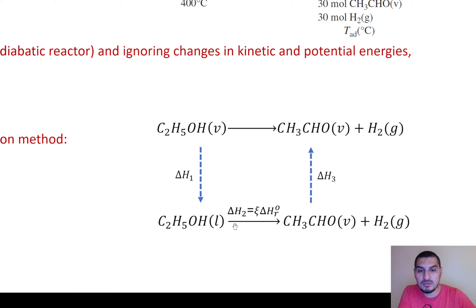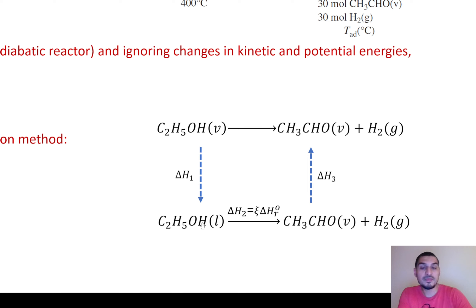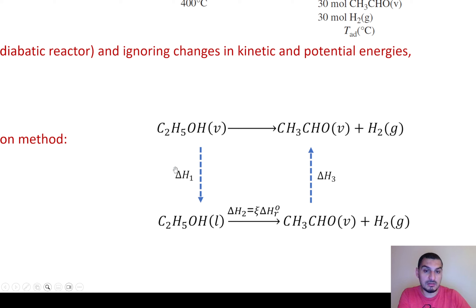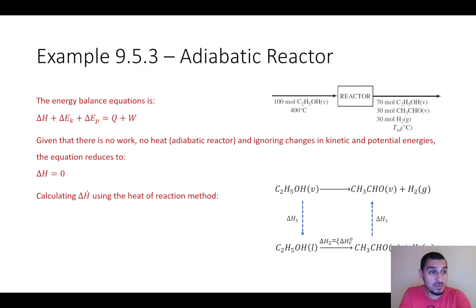One difference from the textbook solution is that I'm considering ethanol to be liquid at standard conditions. The reason is that the boiling point of ethanol is around 78.5 degrees Celsius at one atmosphere, so ethanol at 25°C and one atmosphere is definitely liquid. The textbook assumes ethanol as vapor at standard conditions, which makes the H1 step quicker. I'll show the difference in results at the end.